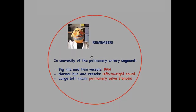In conclusion, convexity of the pulmonary artery segment is easy to diagnose if we know where to look. If accompanied by large hila and scarce vessels, the tentative diagnosis is pulmonary artery hypertension. If the hila are normal and vessels are normal to increased, suggest a left-to-right shunt. If there is convexity with a large left hilum, the tentative diagnosis should be pulmonary valve stenosis.